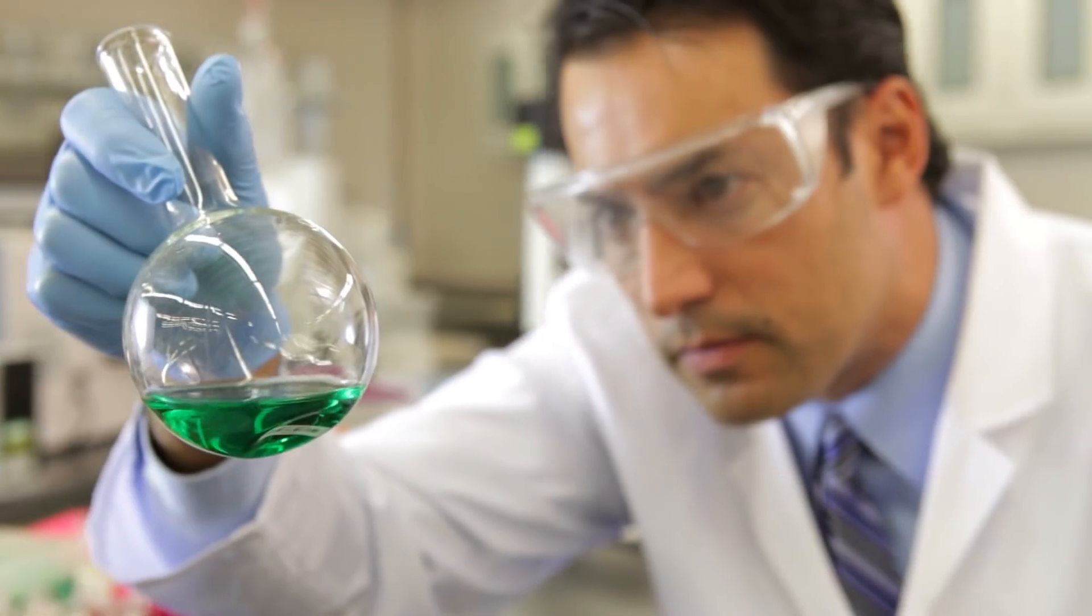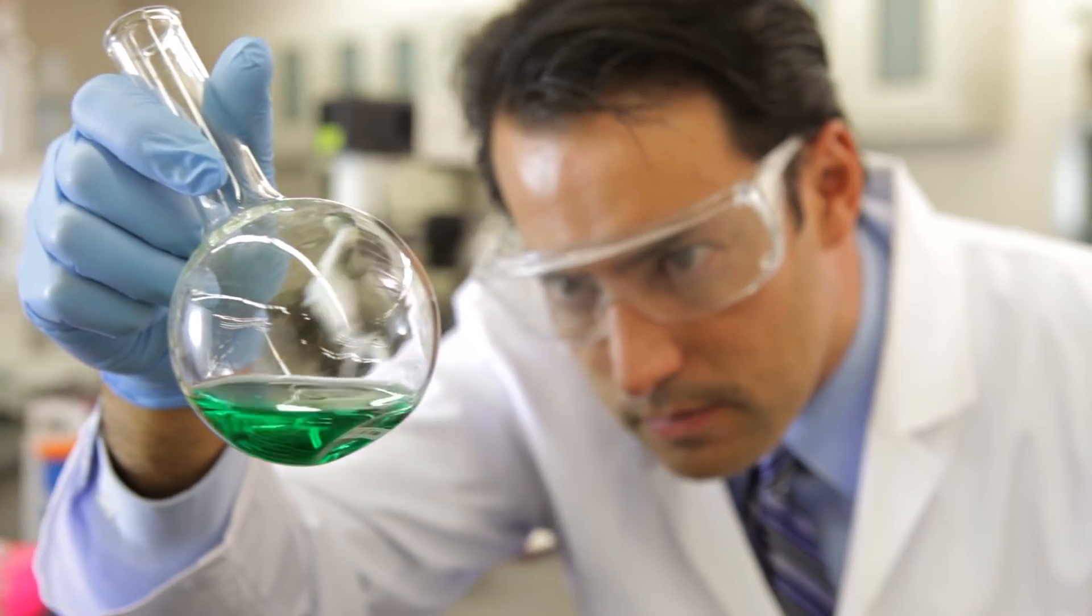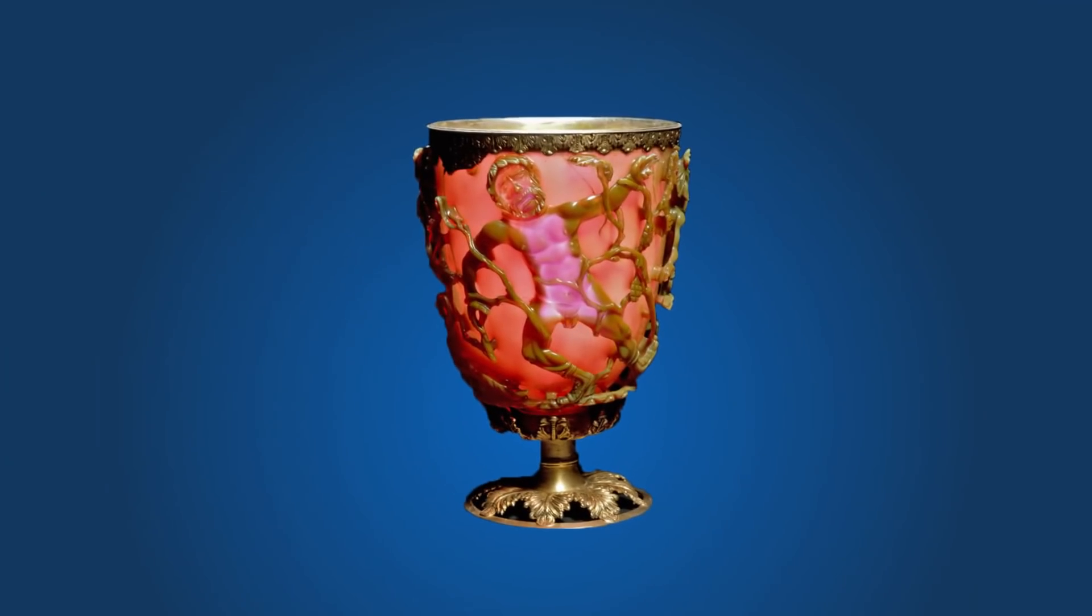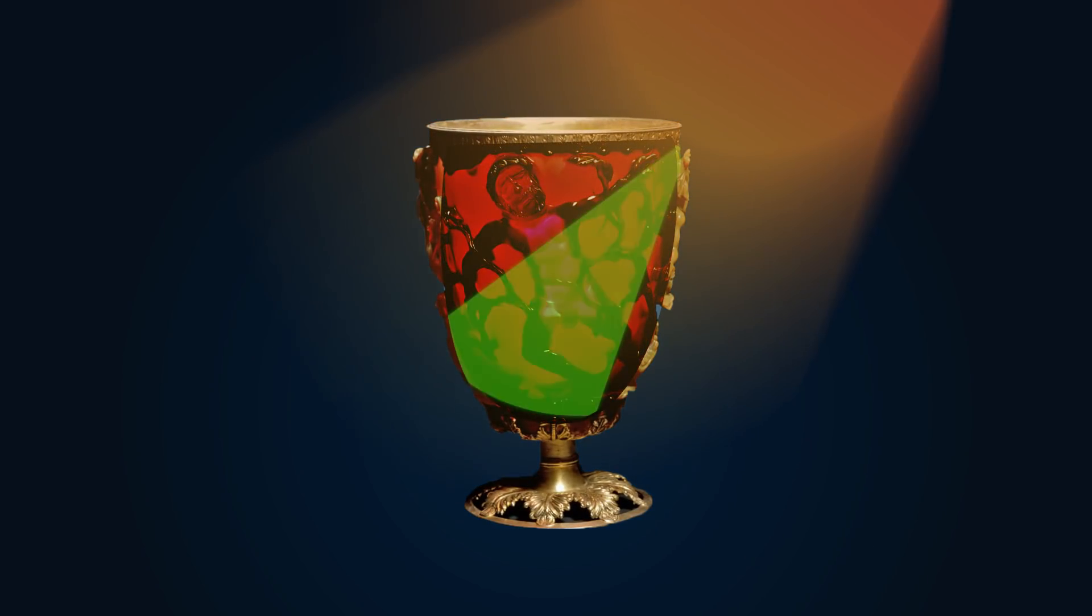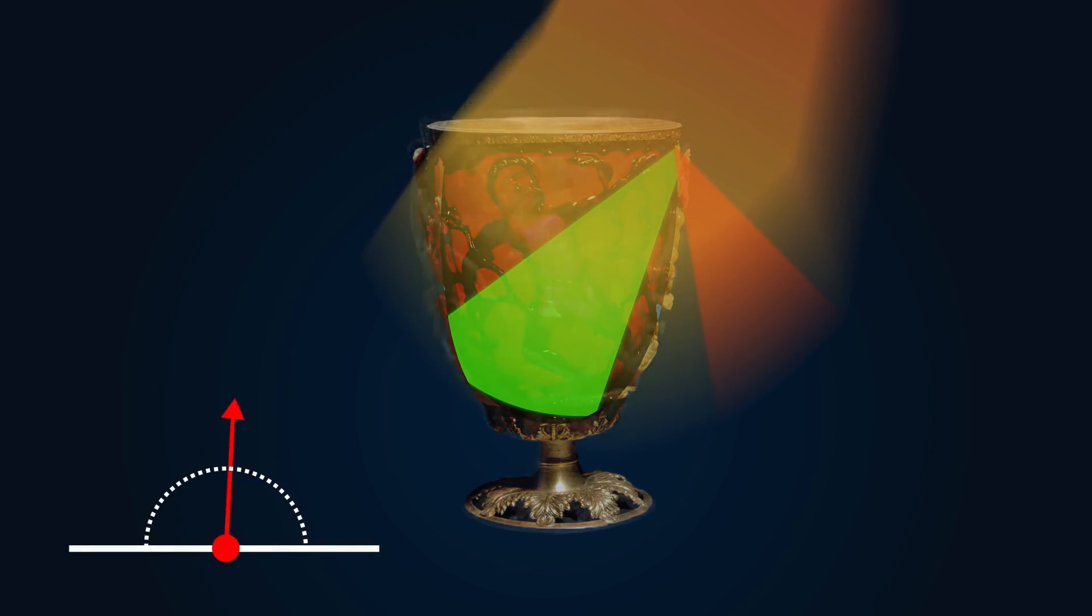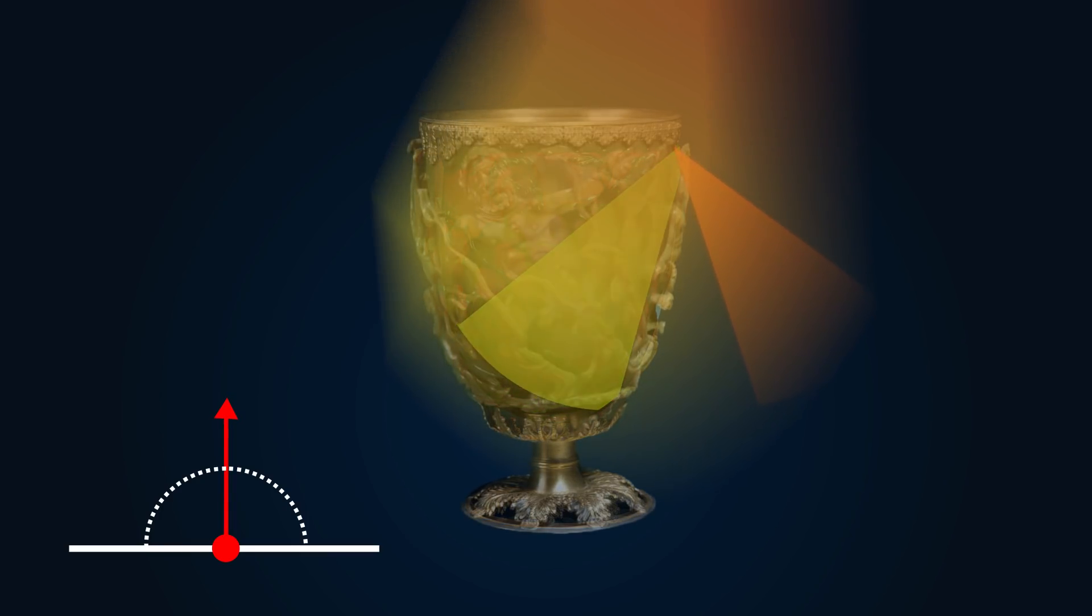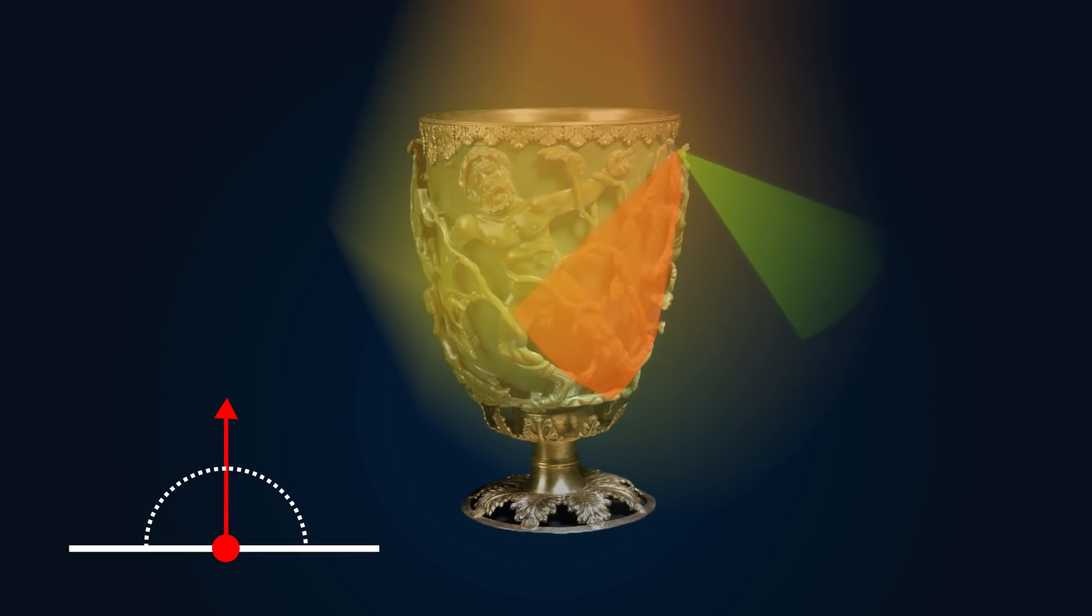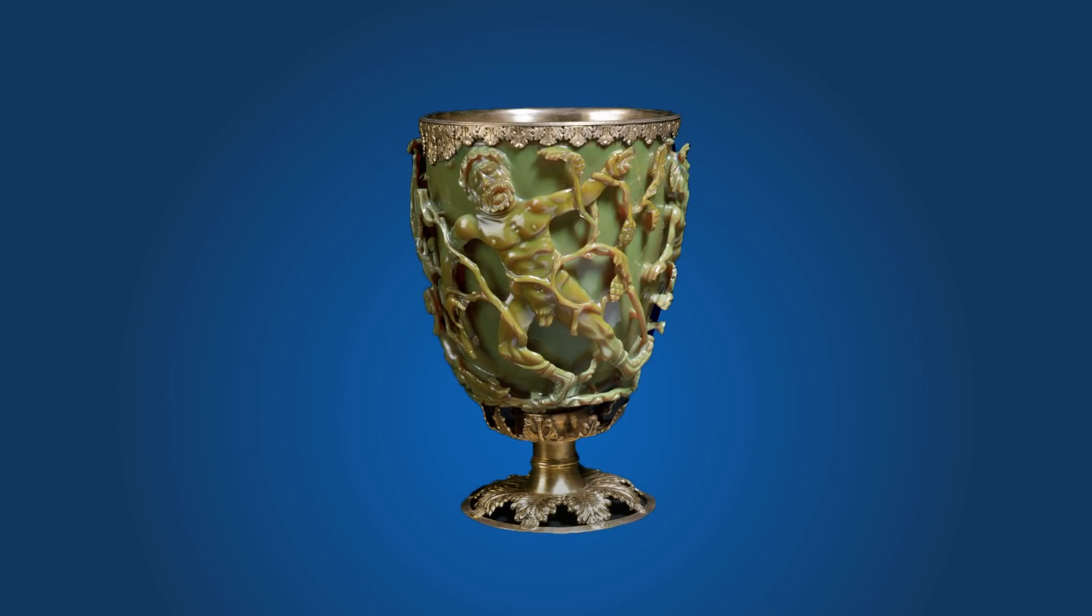Ancient or not, there's some sophisticated science at play in the cup's mesmerizing effect. When light hits the particles in the cup, some of it is absorbed while some is reflected. The angle at which the light hits the cup changes the ratio between these two factors, altering the wavelengths of the light that passes through. This causes the color of the cup to change, depending on the position of the light source.